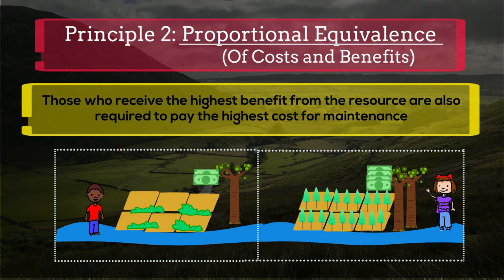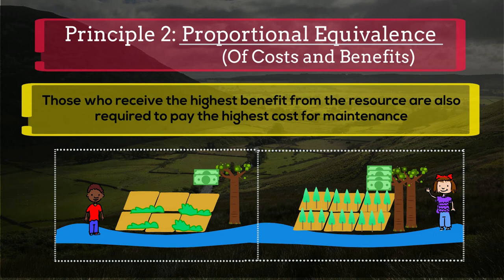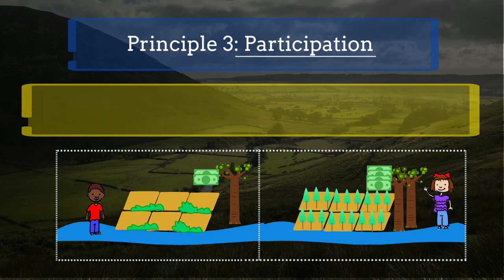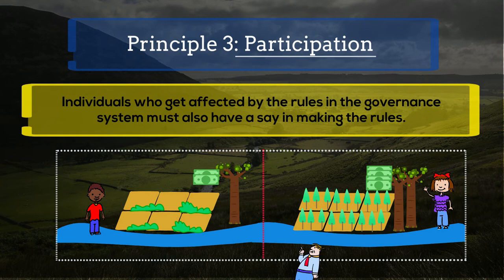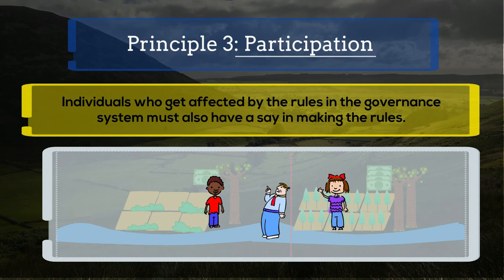Principle 3: Participation. This principle ensures that those who are affected by the rules of the resource governance system are also involved in the decision-making process, as individuals who directly interact with the resource and with other users in the system are in a better position to design strategies that work for them.